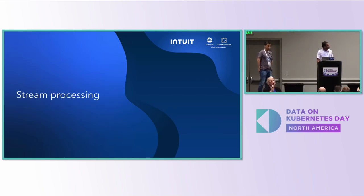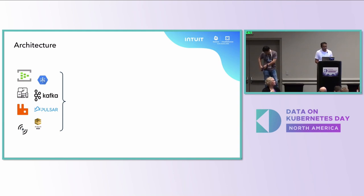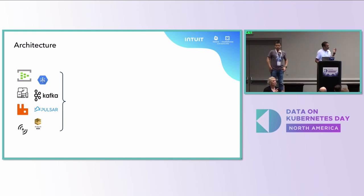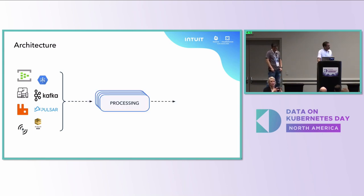Now I'll get to the main topic: stream processing. What exactly is stream processing? It starts with reading data from a source. A stream by itself means it's an unbounded source — it never ends. You keep reading from Kafka, Pulsar, SQS, it doesn't matter. Any protocol — MQTT — you read data from a source and then you do some processing.